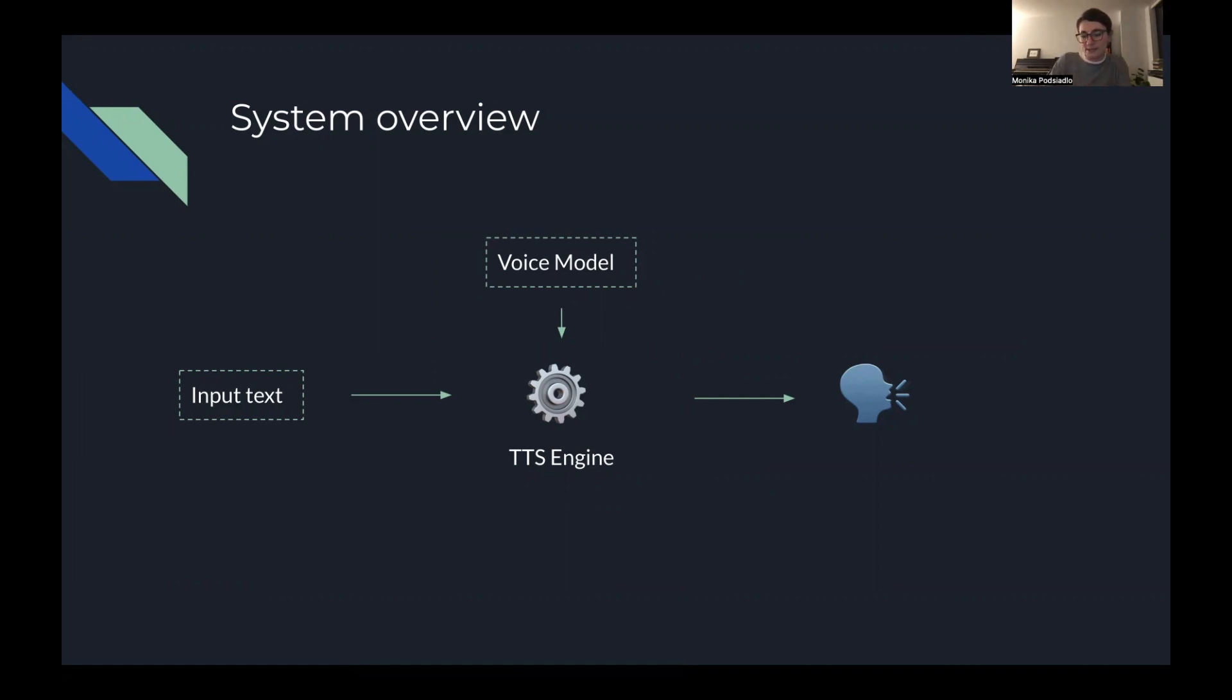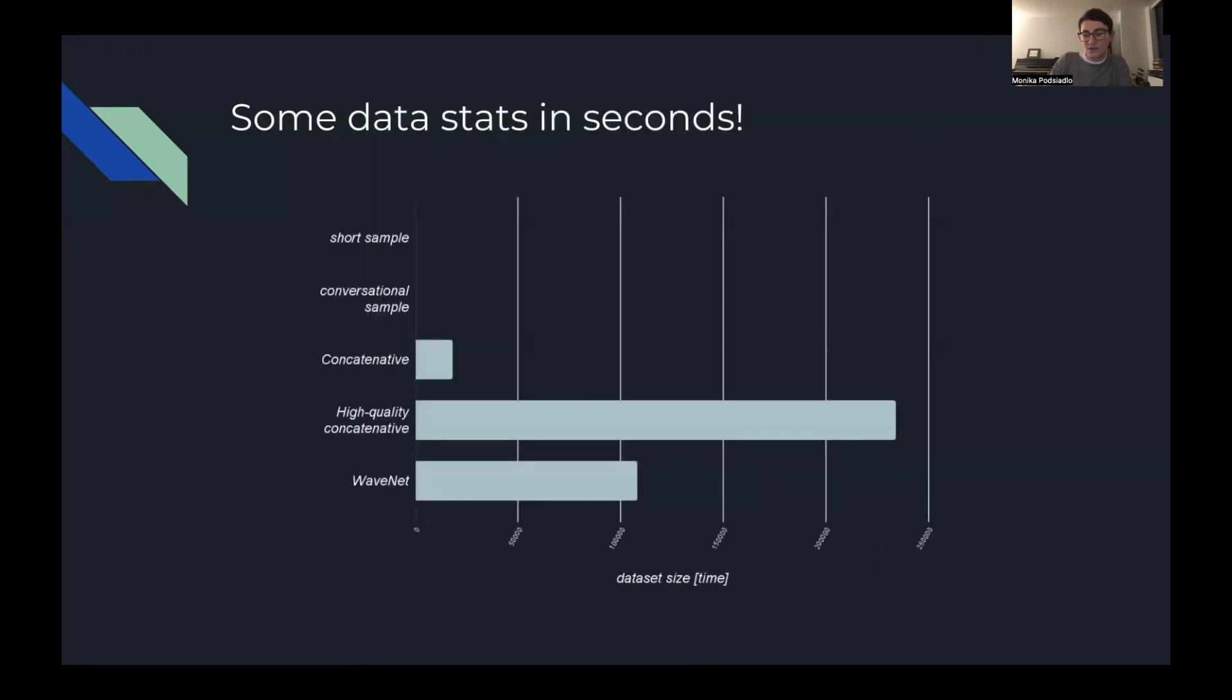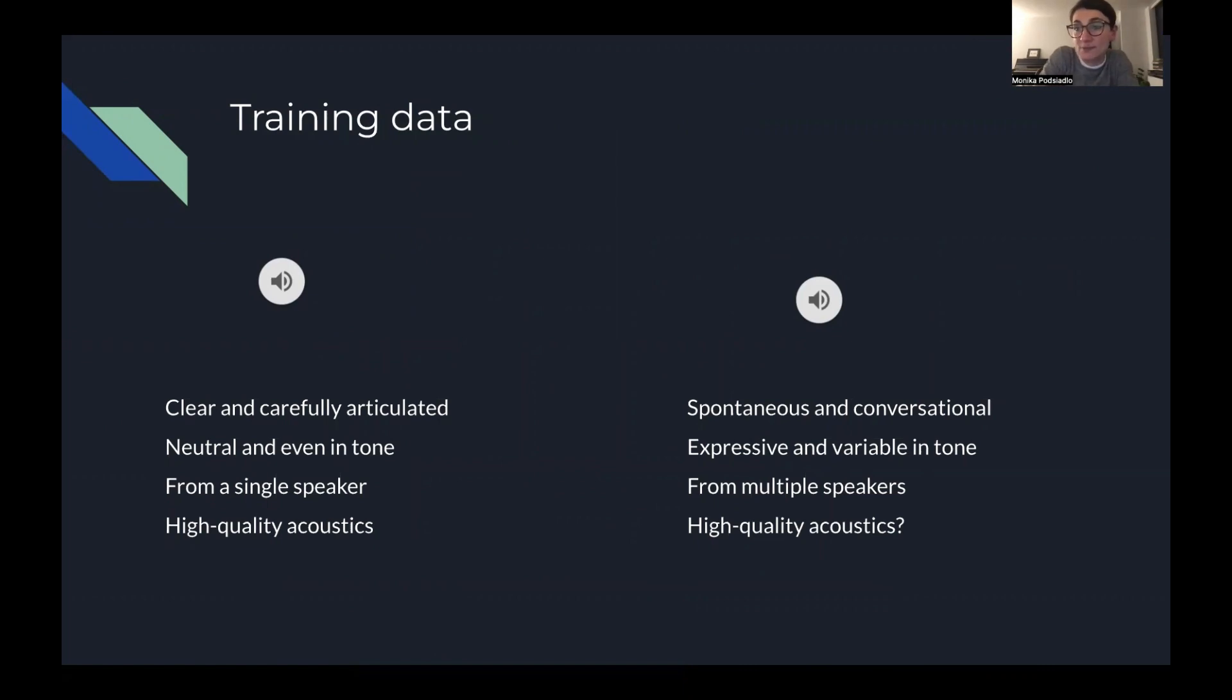And on the next slide, I wanted to play you a sample utterance from a typical training corpus for a text-to-speech voice model. Manhattan District Attorney Cyrus R. Vance Jr. announced Wednesday that 94 people had been indicted on various charges. It's a very nice sample. I like it. You can hear it's clear, it's carefully articulated, it's neutral and even in tone, and that's by design. I'm a single speaker and the acoustic quality is pretty good.